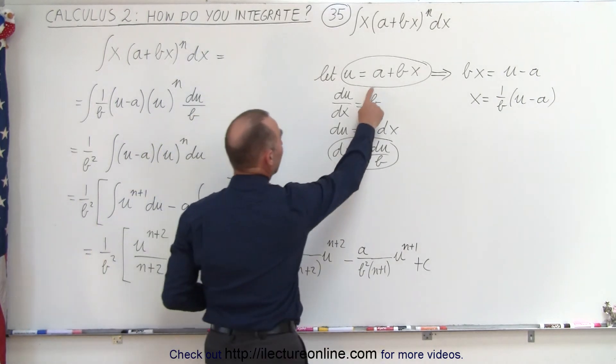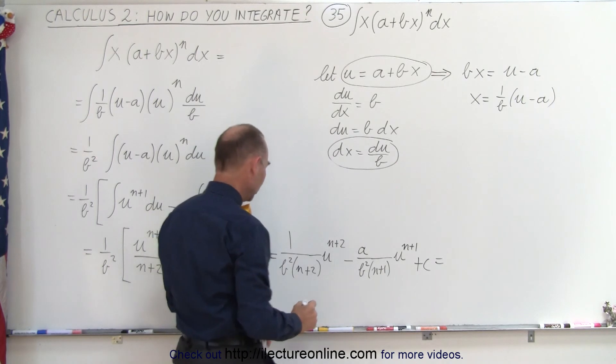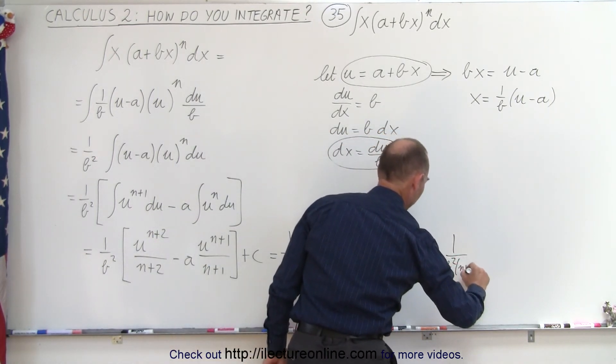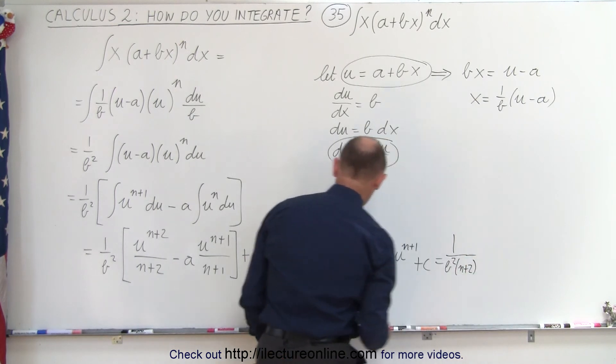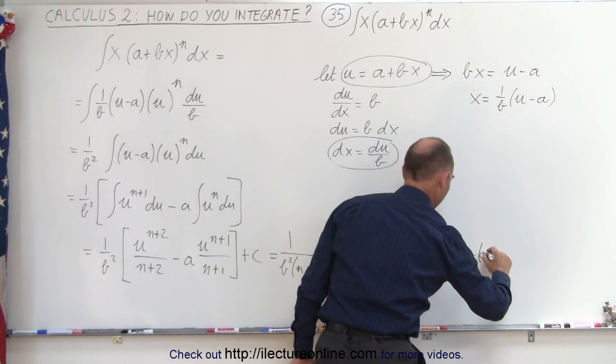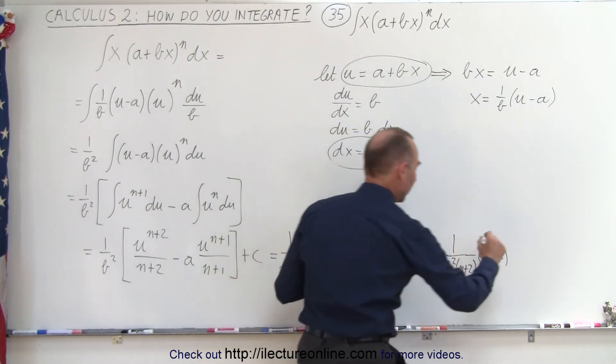Since u equals a + bx, we're going to finally write this as follows. We still have 1 over b²(n+2) times (a + bx)^(n+2).